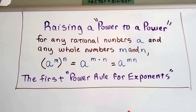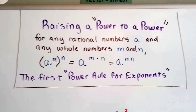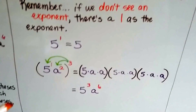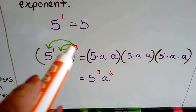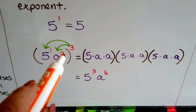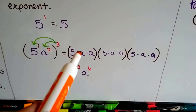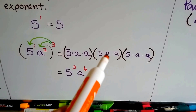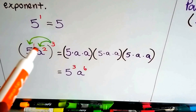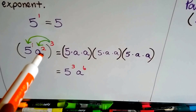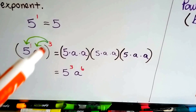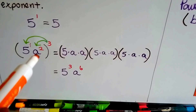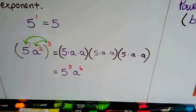Some books call it power rule a, b, and c — we'll talk about those in the next videos. Remember, if we don't see an exponent, there's a one as an exponent, because five to the first power equals five. So you would do three times one and three times two, giving five a squared. Five times a times a, five times a, and five times a times a — we're doing it three times. This two only affects the a, not the five. So three times one gives the exponent three for five, and three times two gives six for a. One, two, three fives, and two, four, six a's.